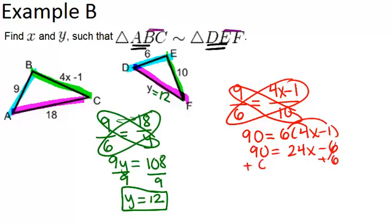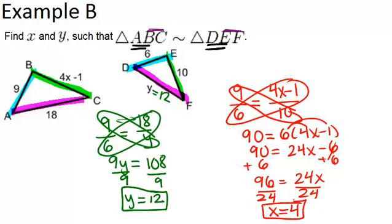Add 6 to both sides to keep solving, so 96 equals 24X. And then when we divide by 24, we get our answer that X equals 4. Alright, and we are done.